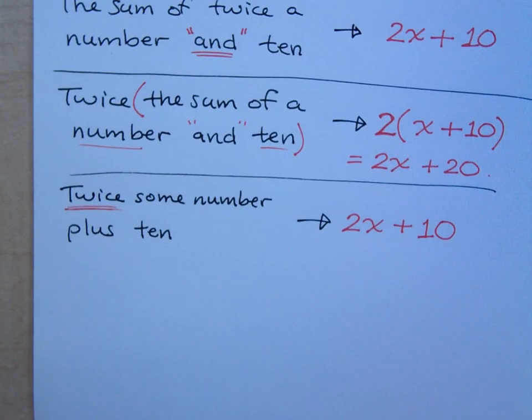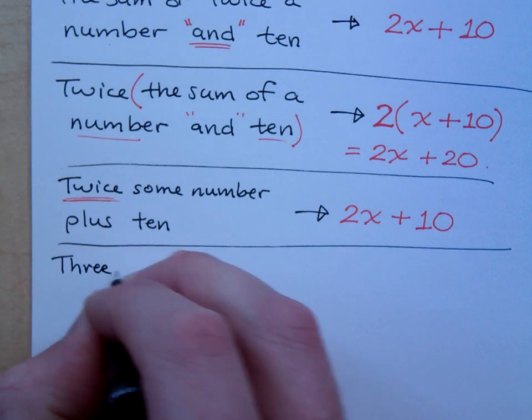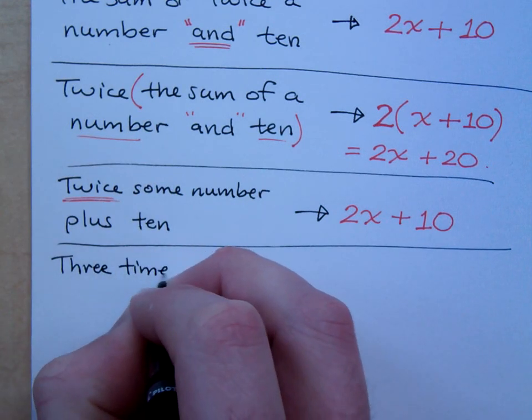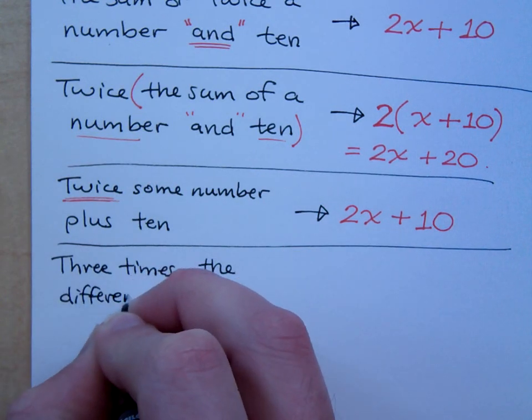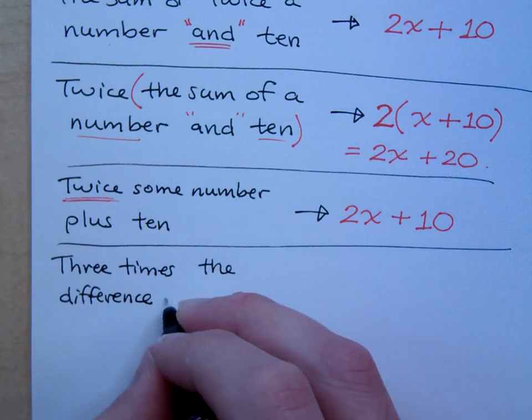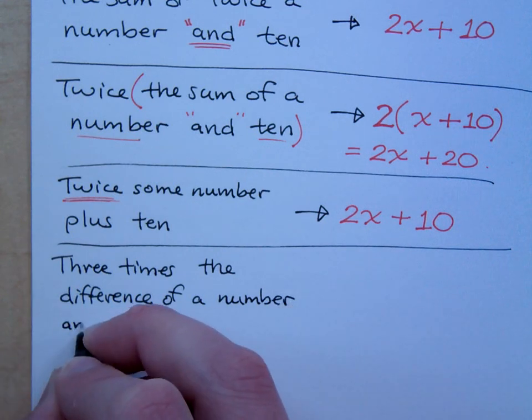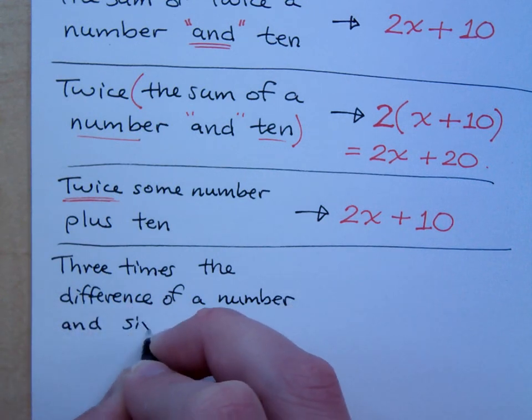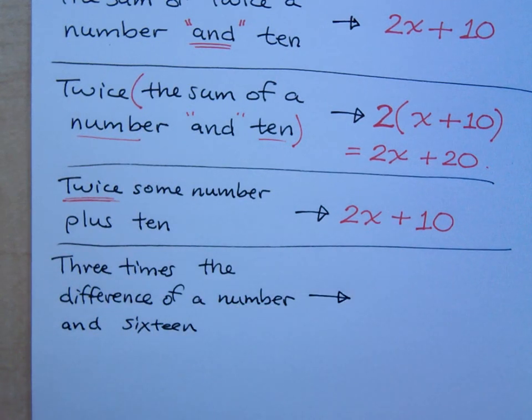Okay, let me try something else here. If I have three times the difference of a number and 16. Three times the difference of a number and 16. So I see three first, three times. There's multiplication here. Three times what?